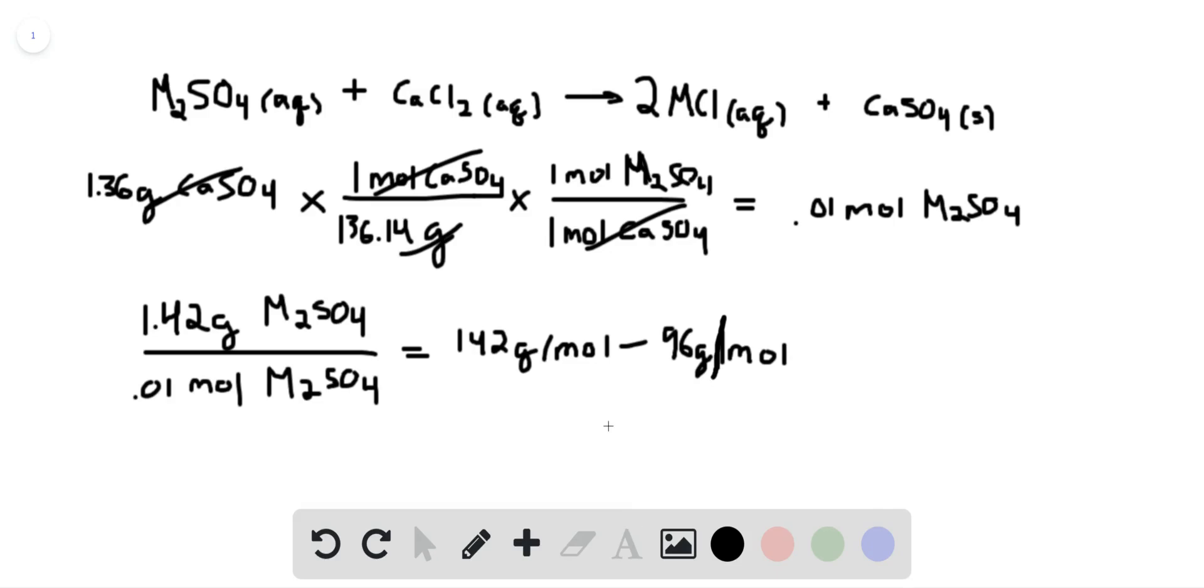This is the molar mass of M2SO4 minus the molar mass of the sulfate ion, divided by 2, which will give us the molar mass of M.